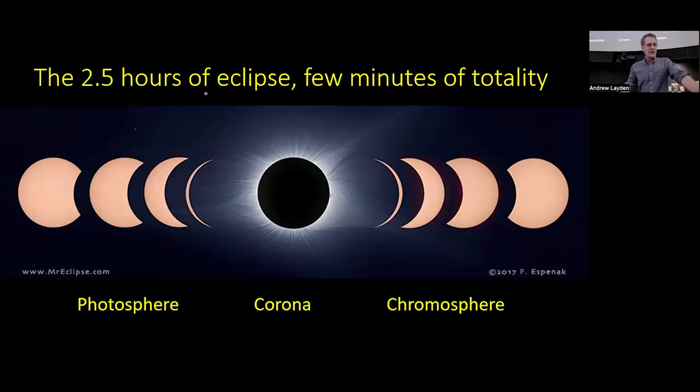During our eclipse experience this April, we expect a total duration of about two and a half hours from the start of the eclipse when the moon first touches the bright disk of the sun. It will progress over the course of about an hour and a quarter until we get a precious few minutes, about three minutes from Bowling Green here, of totality when the moon's dark disk completely covers the bright surface of the sun and the corona shines out.